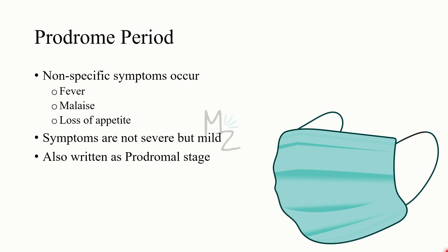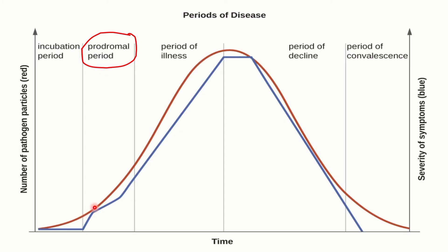The prodromal period, also called the prodromal stage, is when the first symptoms start. The symptoms are not specific and not severe — they are mild. For example: low-grade fever, headache, malaise, and loss of appetite. The person knows something is off and they are going to be sick very soon. On the graph, the number of pathogens is increasing constantly at this stage, and symptoms also start to increase, but remain mild.